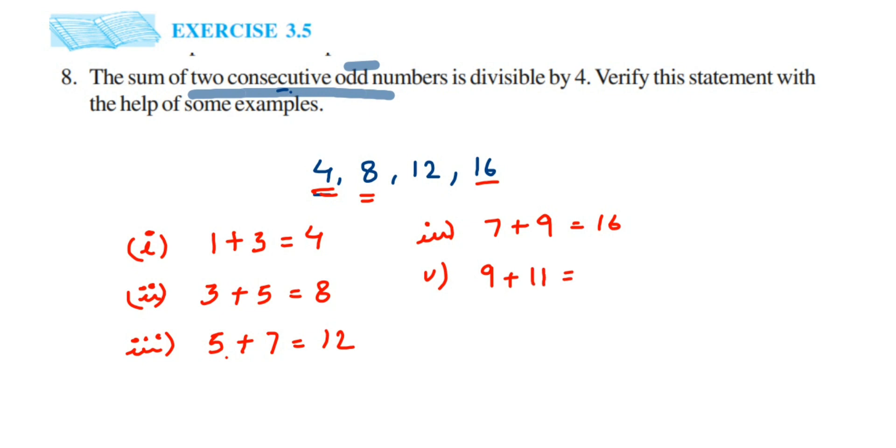It's forming a pattern: 1 plus 3 is 4, the next odd number 3 plus 5 is 8, 5 plus 7 is 12. So if you take any two consecutive odd numbers and add them up, they are actually a multiple of 4.